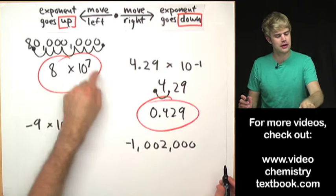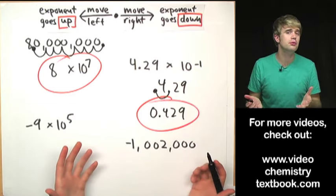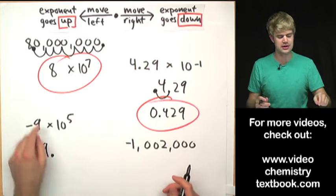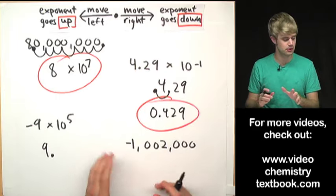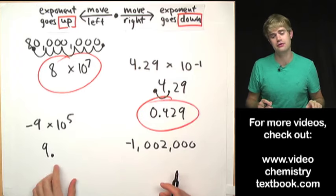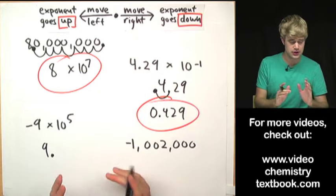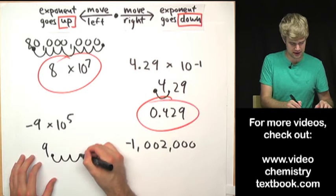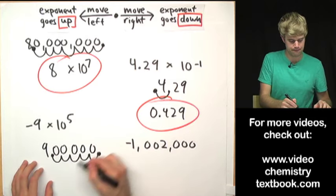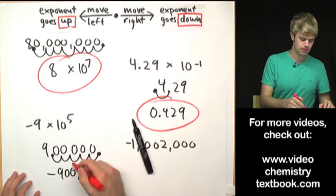Negative 9 times 10 to the fifth. There's just one number with no decimal written, but we know where it goes. Leave the negative sign out until the end. To get out of scientific notation, move the decimal place to the right to bring the exponent down from fifth to zero: 10 to the fourth, third, second, first, zero. Fill in the new spaces with zeros to get 900,000, then add back the negative sign.